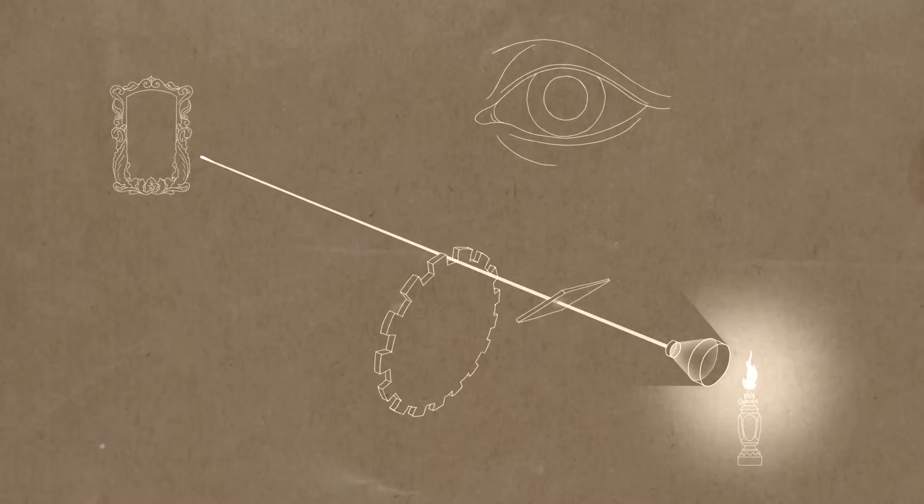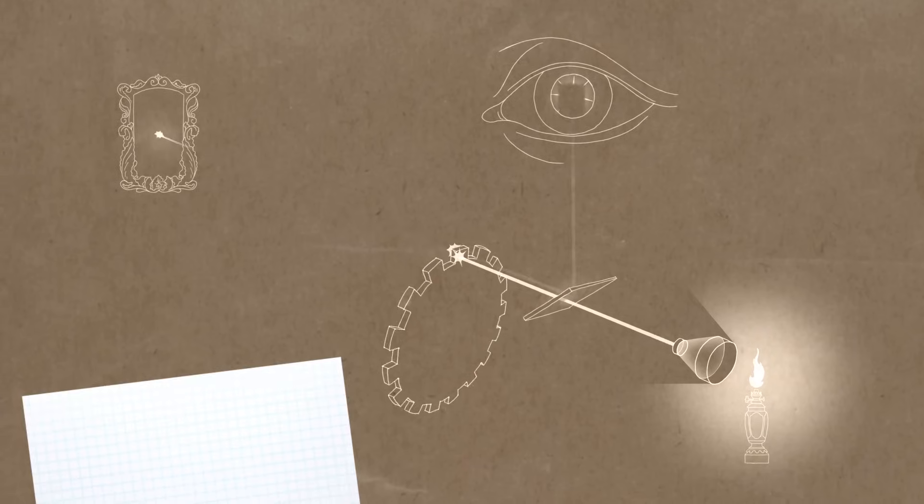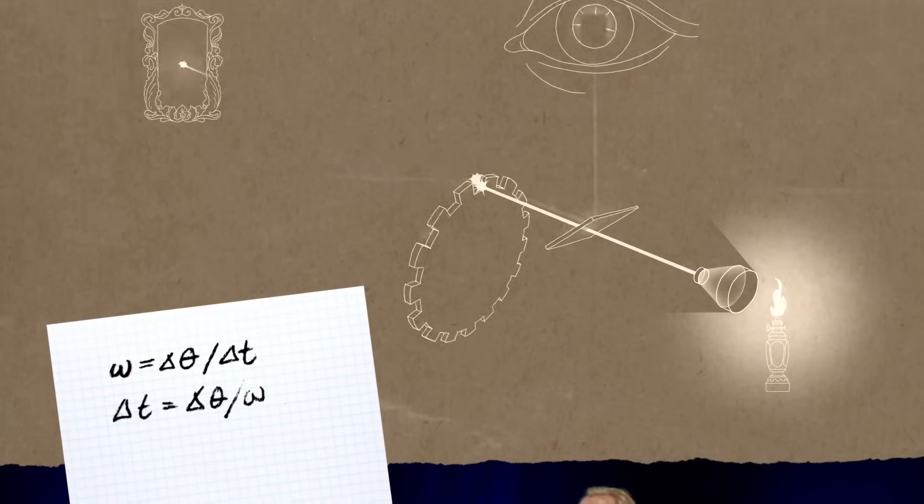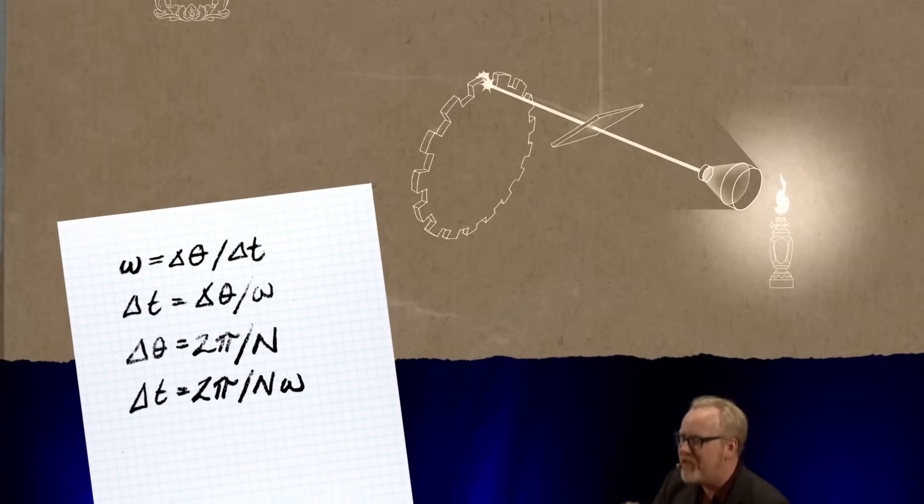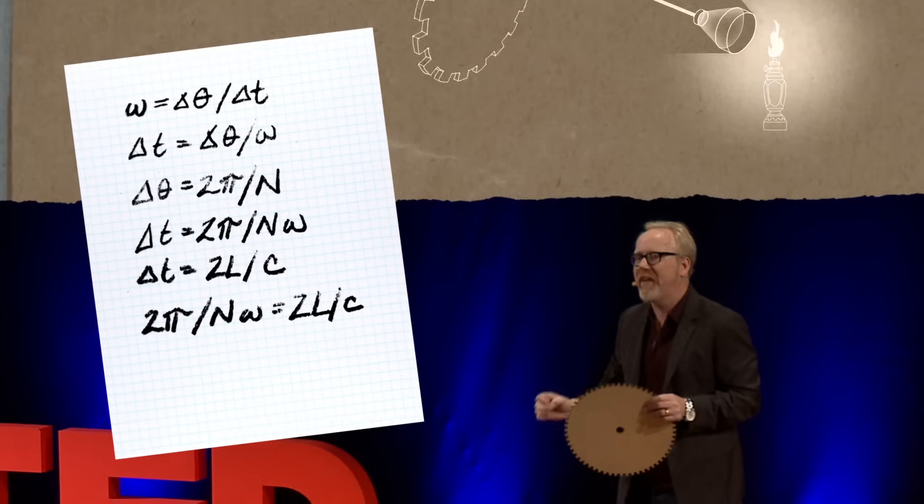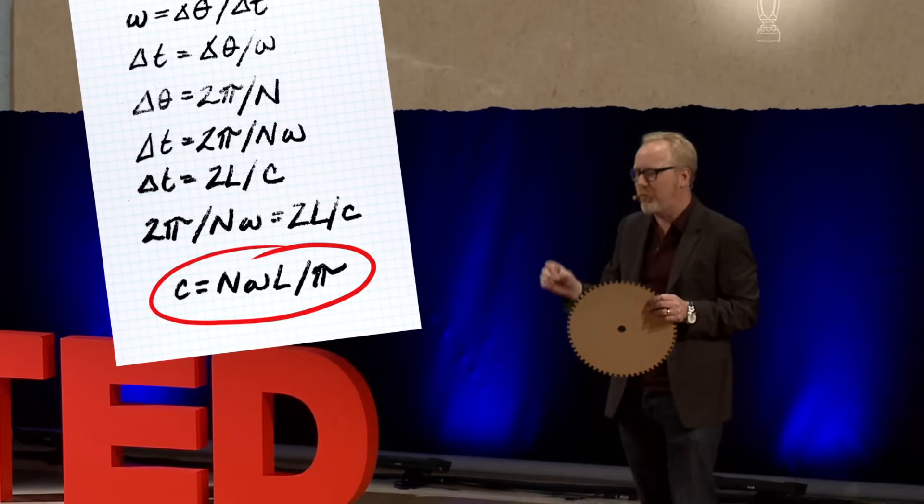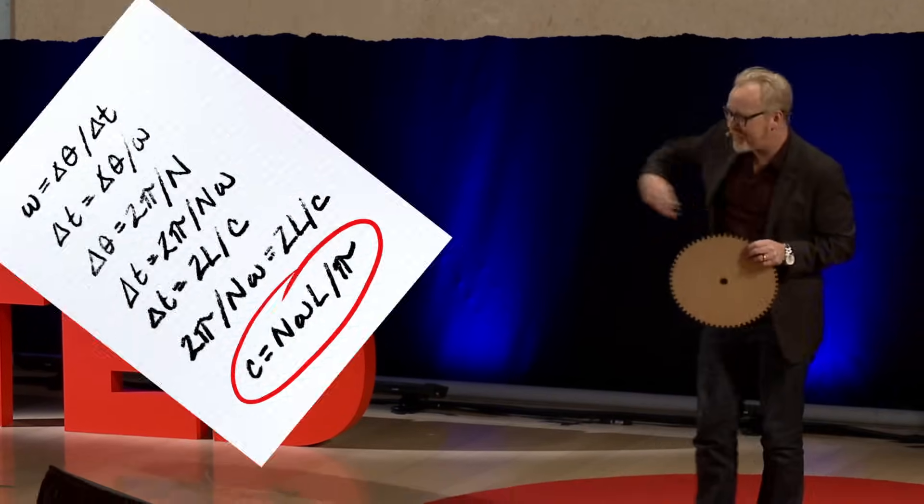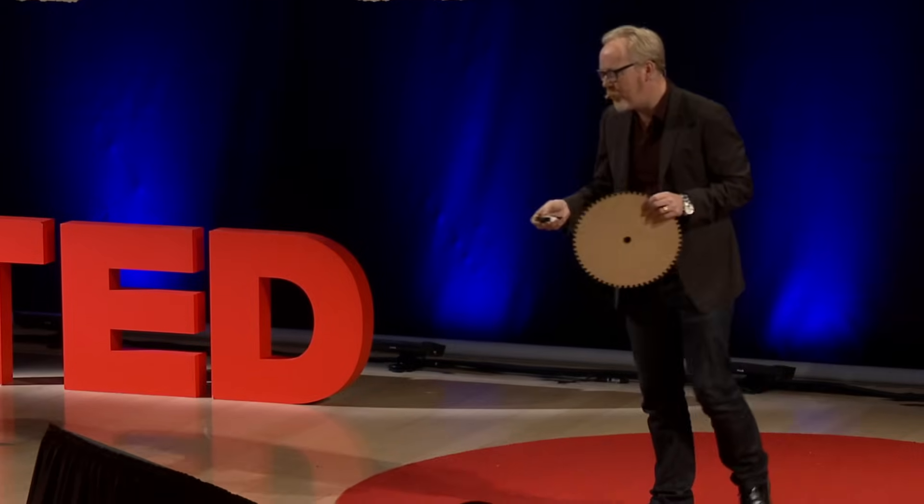It's because the pulse of light, it's not coming back through the same notch. It's actually hitting a tooth. And he spins the wheel fast enough, and he fully occludes the light. And then, based on the distance between the two stations and the speed of his wheel and the number of notches in the wheel, he calculates the speed of light to within 2% of its actual value. And he does this in 1849.